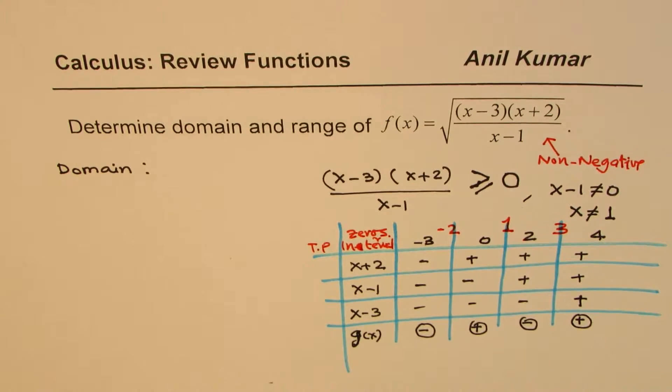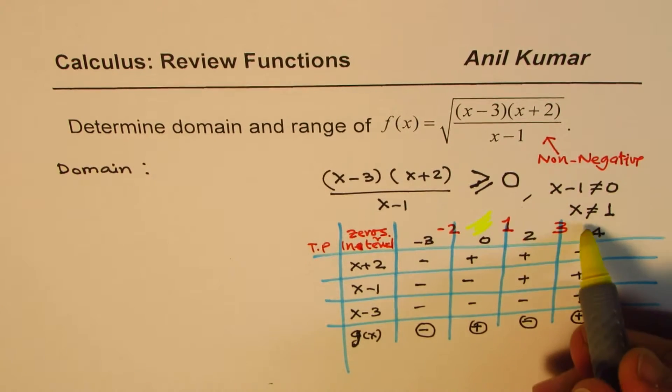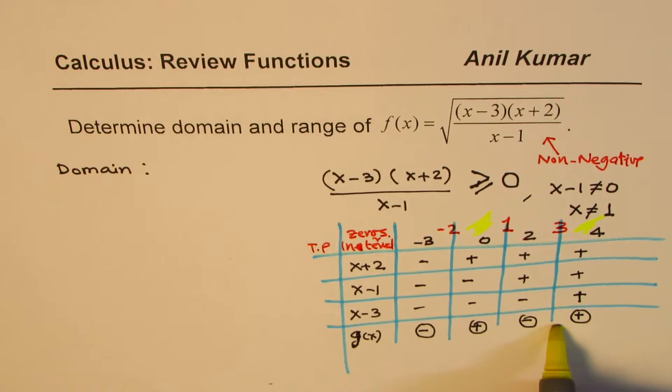So, what we observe here is that there are two intervals where the function is positive. And these intervals are these two. So, let me just mark these two intervals. So, these are the intervals of our interest. So, this one and this one. So, these are the intervals. They are fine.